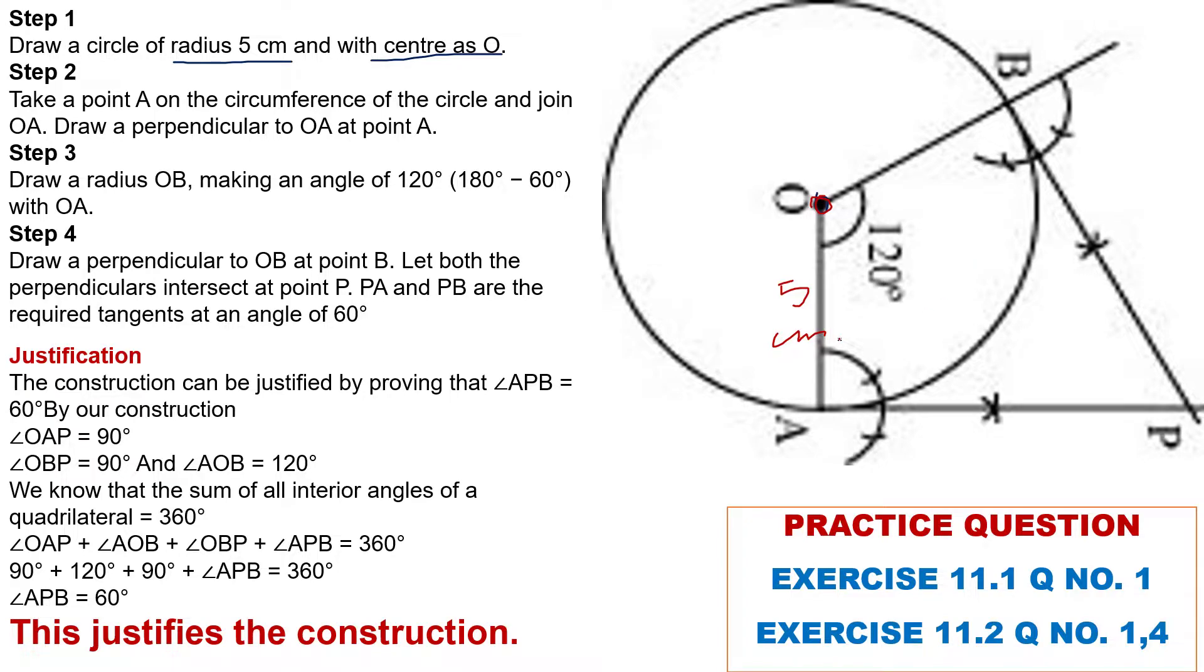Step 2: take a point A on the circumference of the circle and join OA. We take point here and draw a perpendicular to OA at point A. Semicircle, first arc 60 degree, second 120 degree.